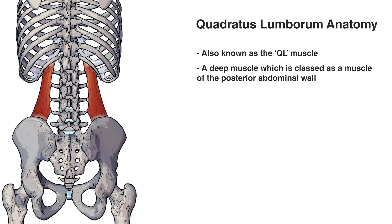Another thing to bear in mind about this muscle is it doesn't connect all the way to the tip of the 12th rib. You'll notice there's no quadratus lumborum connecting to that little section. However, you'll see in some textbooks, drawings, or even 3D anatomy applications that the quadratus lumborum covers the entire end of the rib and connects all the way to the tip. Unfortunately, this is a common mistake — the quadratus lumborum doesn't actually connect all the way to the tip of the rib.